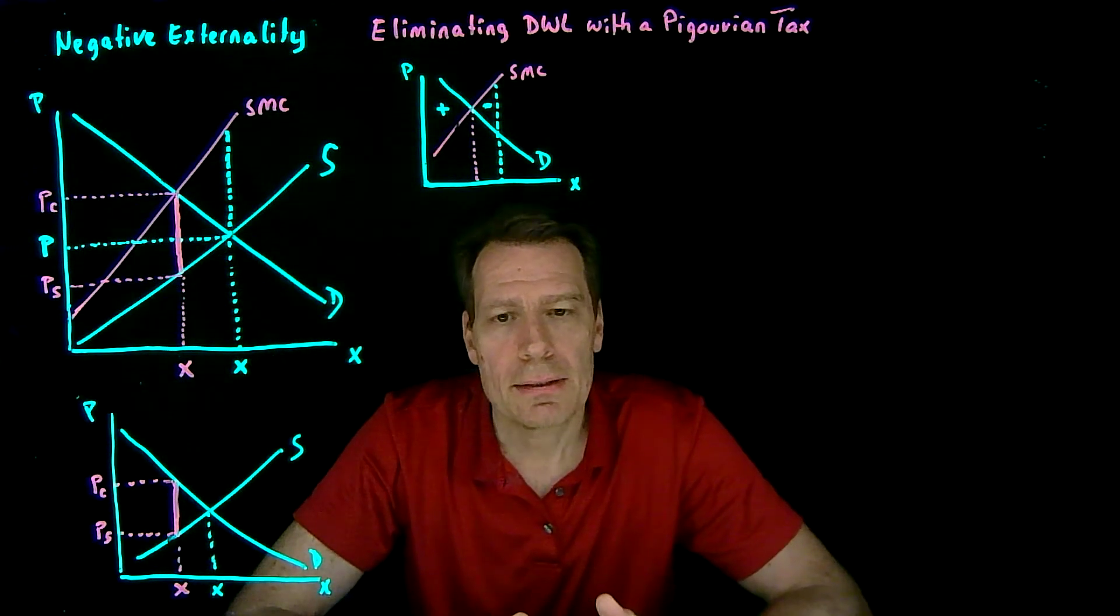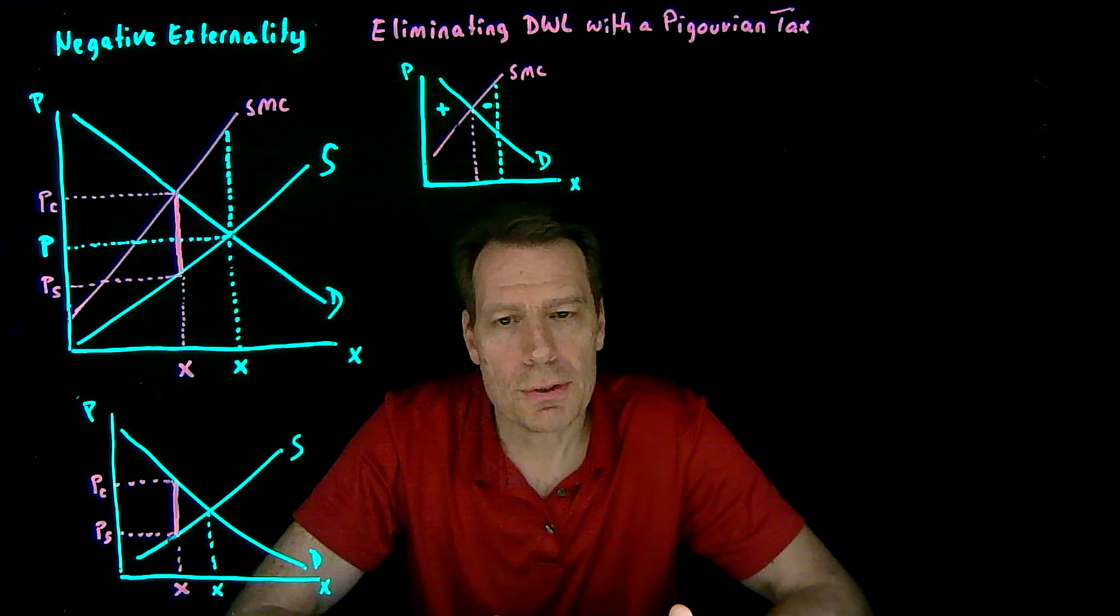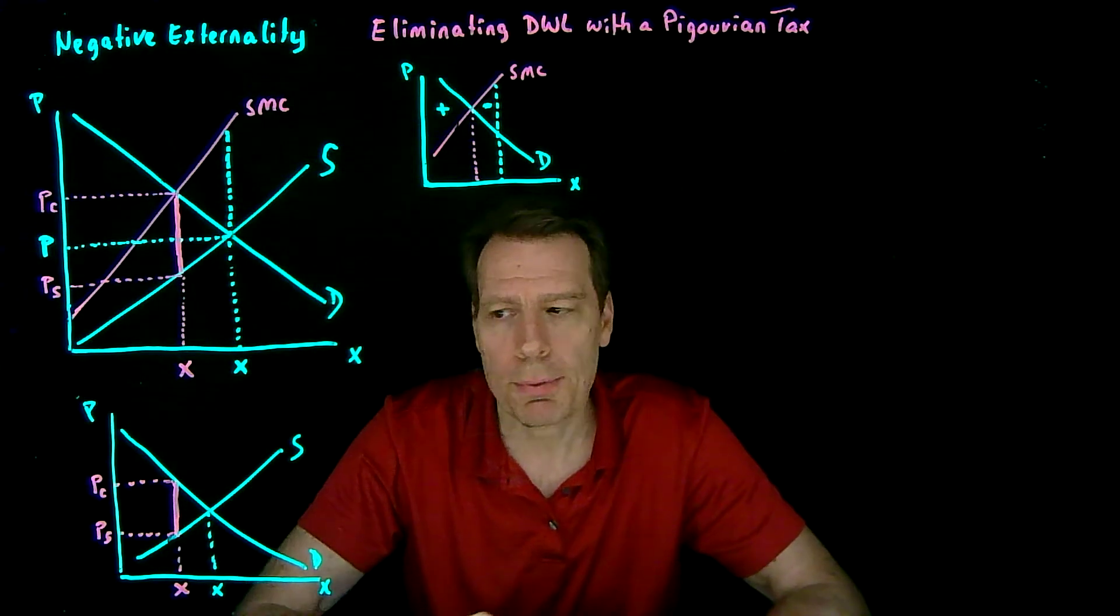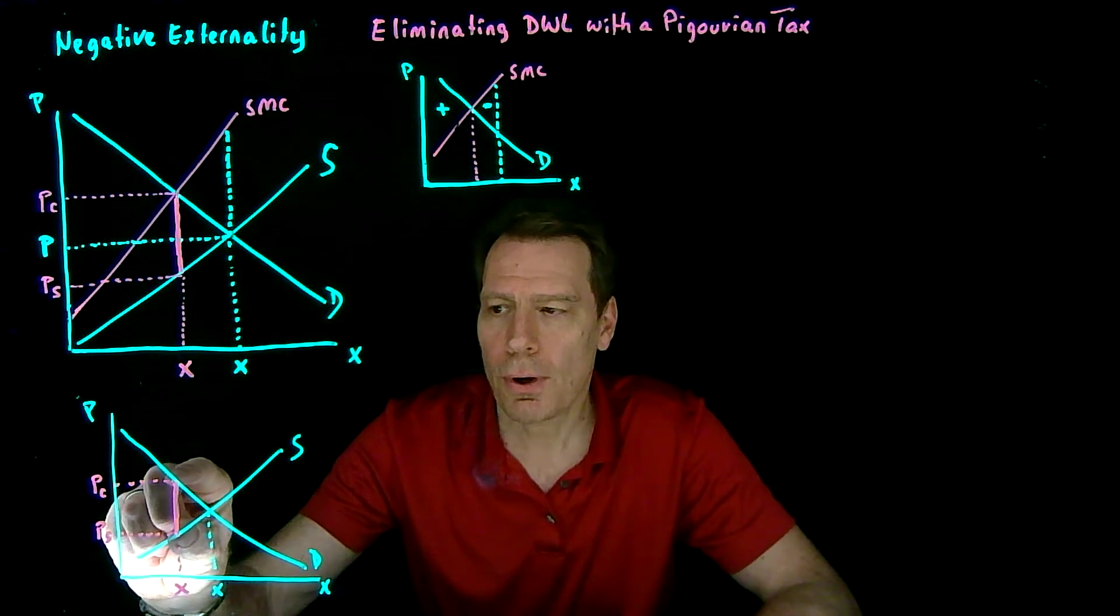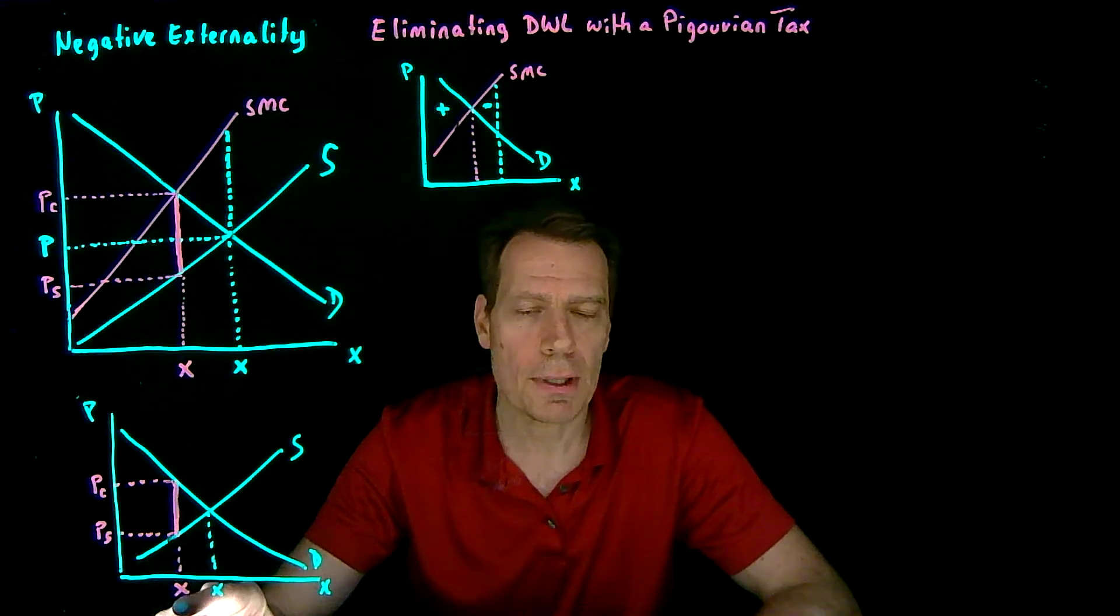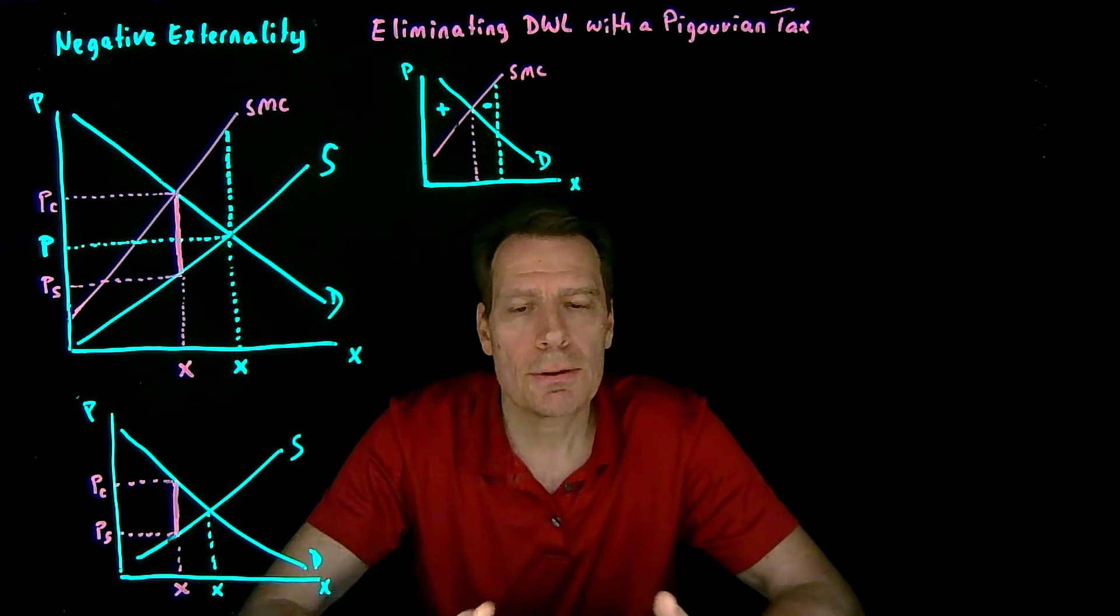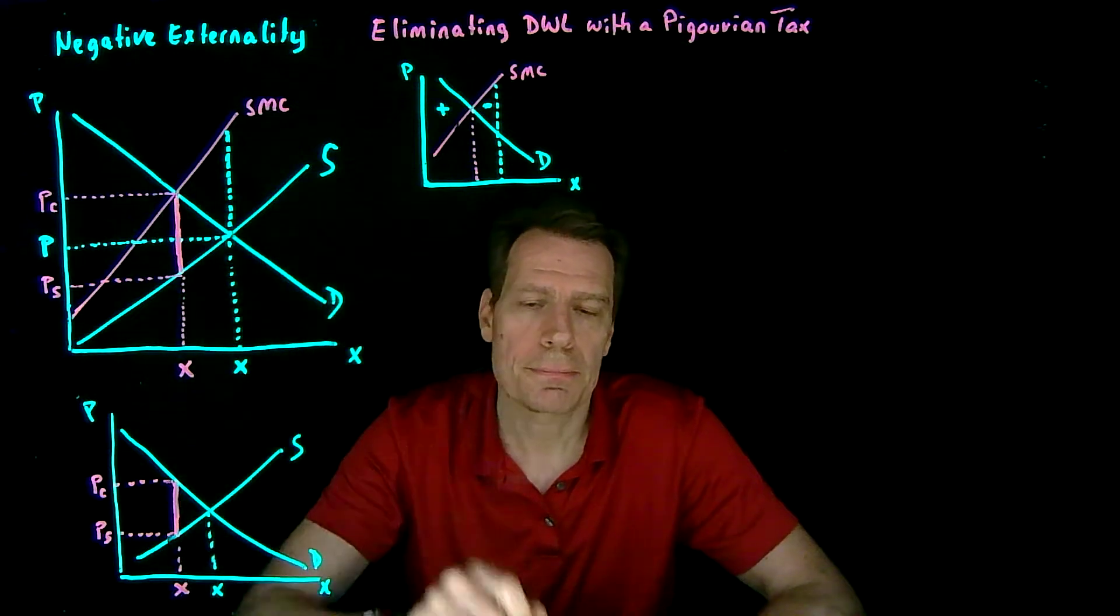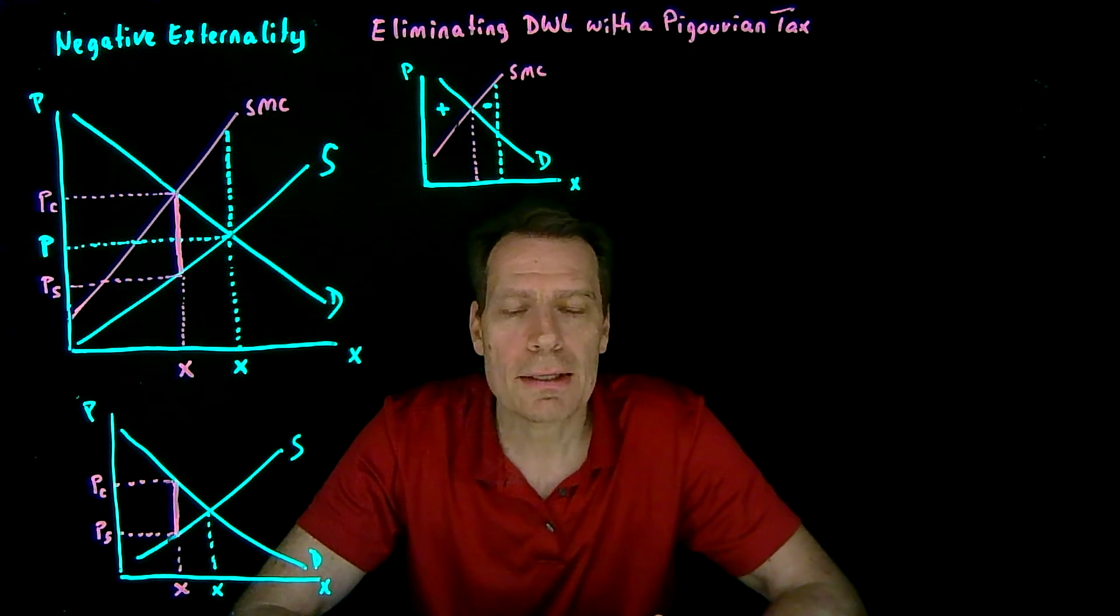We then said that since the market is producing too much, we could just tax that market. We could impose a per unit tax, and if we impose just the right per unit tax, we could cause the market to produce the optimal quantity. And our intuition told us that that should eliminate the deadweight loss. We'll now show that that intuition is correct.